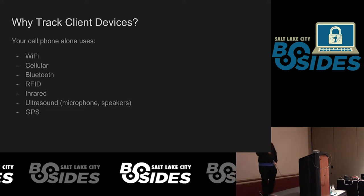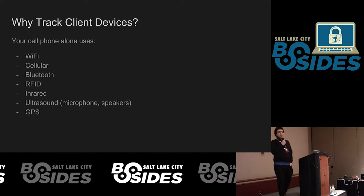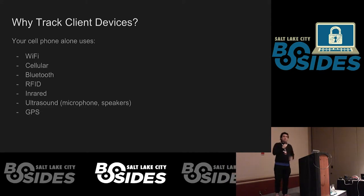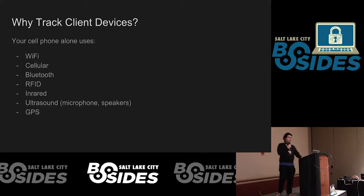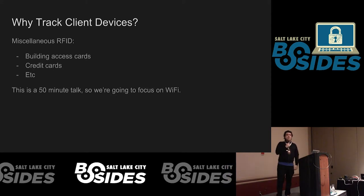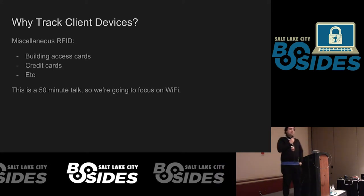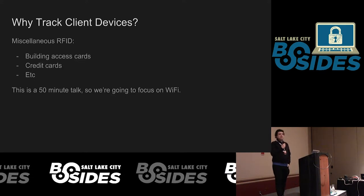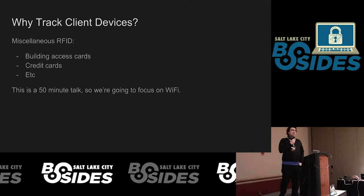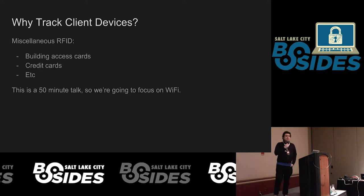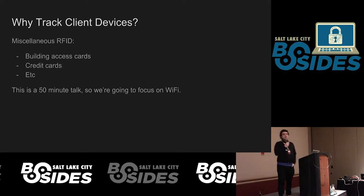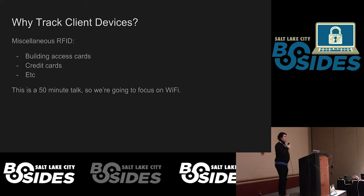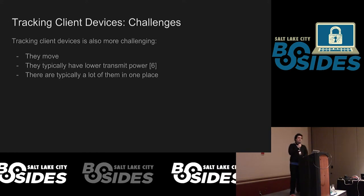Your cell phone alone uses Wi-Fi, cellular, Bluetooth, possibly RFID, possibly infrared or ultrasound through mics and speakers, and GPS. We also have RFID in building access cards and credit cards — stuff you carry around that has some kind of RFID component. This is a 50-minute talk and a broad topic, so I'm going to focus mainly on Wi-Fi, but there are many other applications with this other stuff.